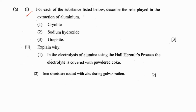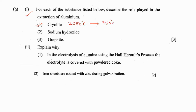For each of the substances listed below, describe the role played in the extraction of aluminium. Cryolite: cryolite can reduce the fusion temperature of the electrolytic bath from 2050 degrees Celsius to 950 degrees Celsius. Also, it enhances the electrical conductivity of the electrolytic mixture.